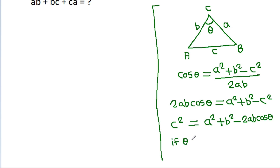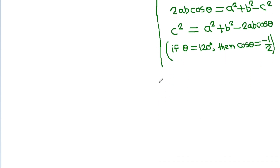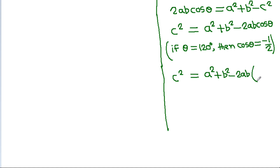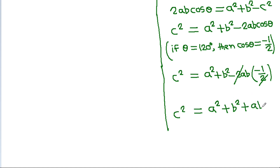If theta is 120 degrees, then cos(theta) equals -1/2. So C² equals A² + B² - 2AB times (-1/2), which gives C² = A² + B² + AB. Therefore C equals the square root of A² + B² + AB.